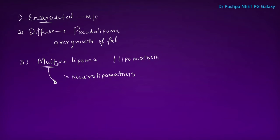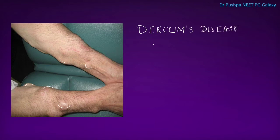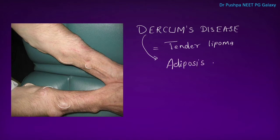The swellings can be of different size and shape. In this picture you can see multiple swellings of different shape and size. There is a condition called Dercum's disease, which is nothing but tender lipoma, also called adiposis dolorosa. This condition usually affects the trunk.